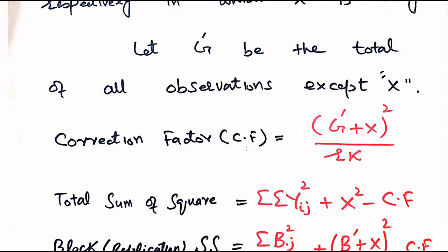Let g' be the total of all observations except x. As we know, in the previous video we explained g for grand total of all the data set. But in this question we have one observation x missing, so we call the grand total g'. Here are the new formulas.